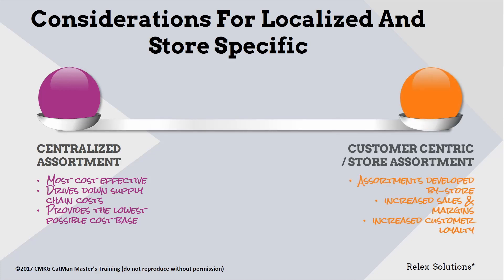However, most retailers want to understand and serve their customers better and offer them the products they really want. They want to build a more customer-centric assortment through store-specific assortments, ultimately increasing sales and margins, driven by consumers being more likely to buy products from a range that is matched directly to their tastes, requirements, and needs.